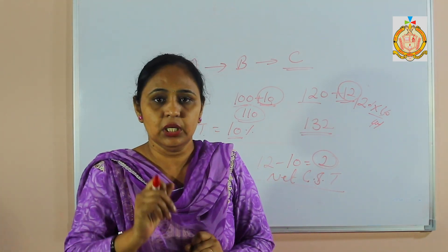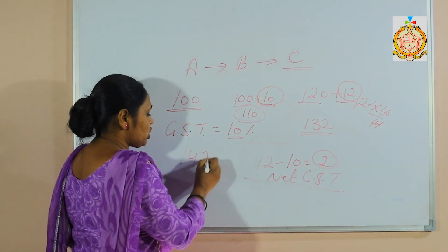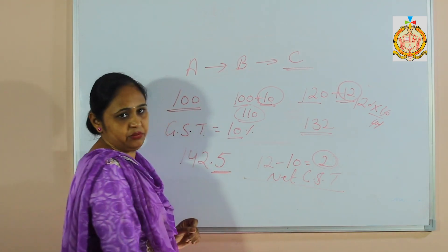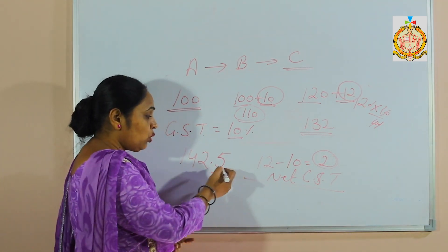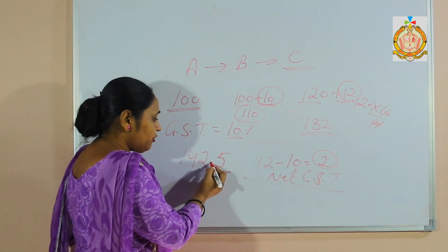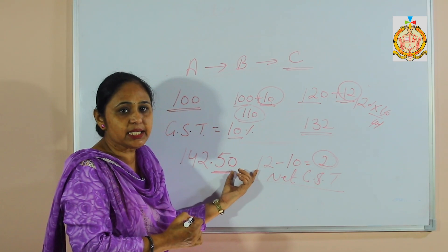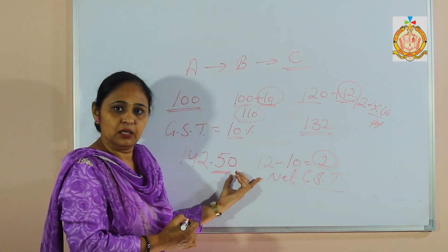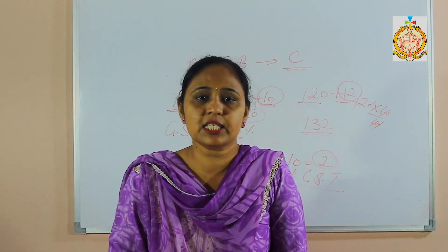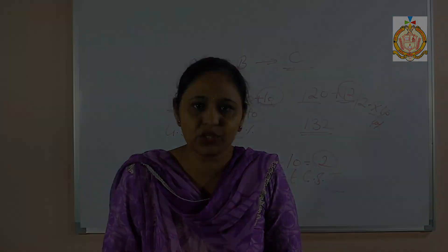When you write the answer, if there is a decimal value — for example 142.5 — do not write just 5 after the decimal. Your marks will be deducted because paisa is not 5, it should be 50. After the decimal point, always take the digit along with a zero — that means 50 paise. Clear students. If you have any doubt you can ask me in the comments. Please try to do it. Thank you students.